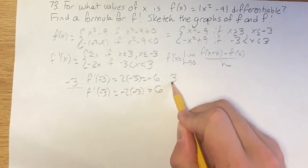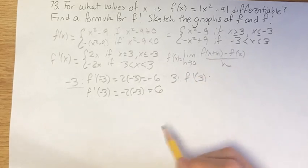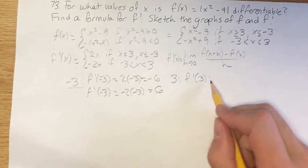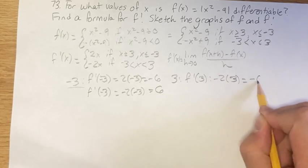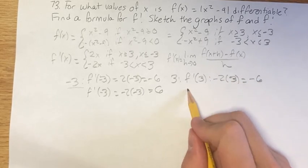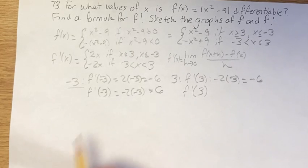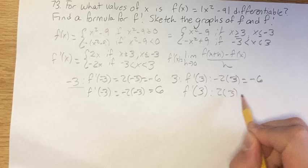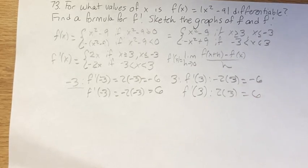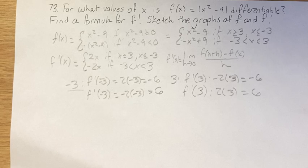Trying it for x = 3: from the left, when x is less than 3, we use negative 2x, so negative 2 times positive 3 is negative 6. From the right, when x is greater than 3, we use 2x, so 2 times positive 3 is 6. These are not equal, therefore it's not differentiable at 3 or at negative 3.